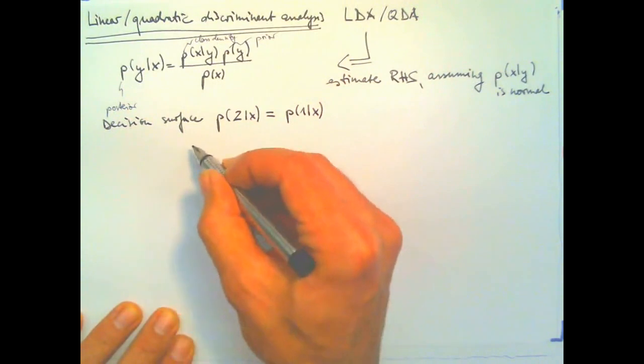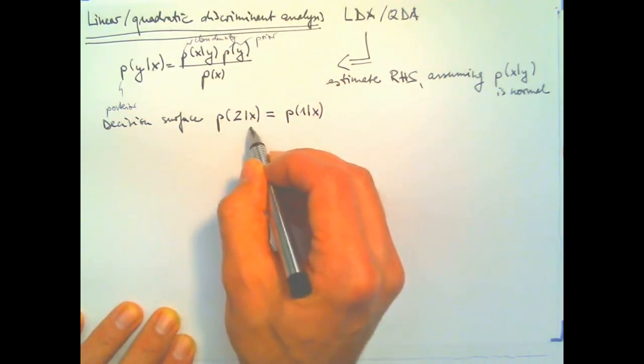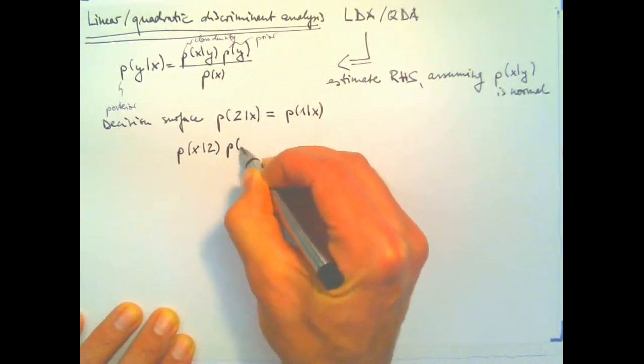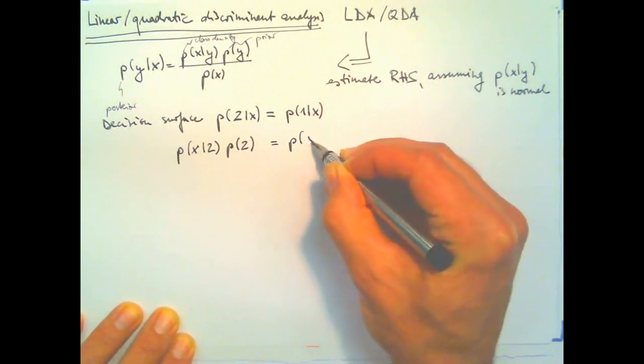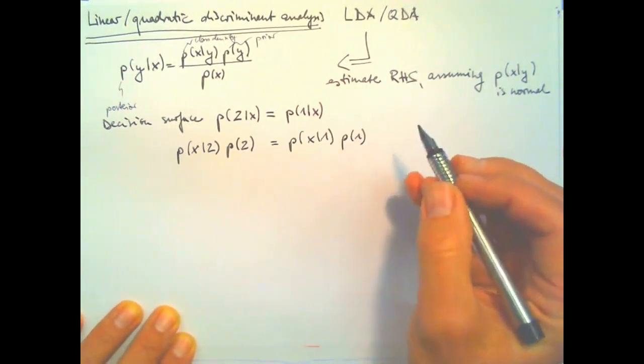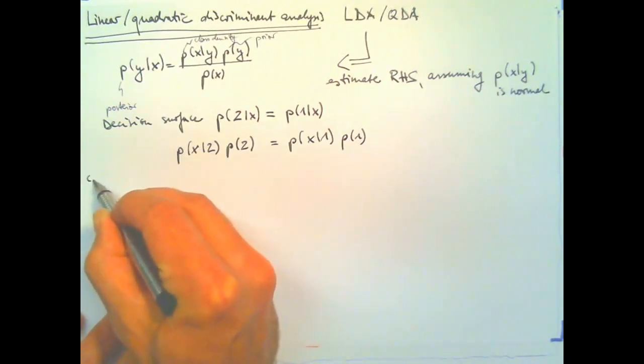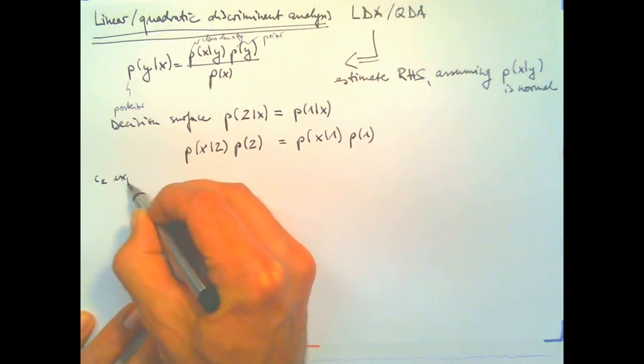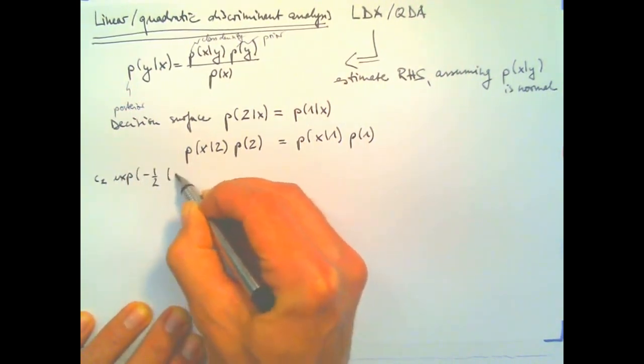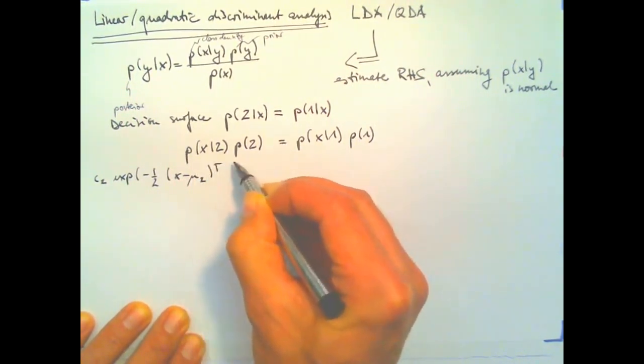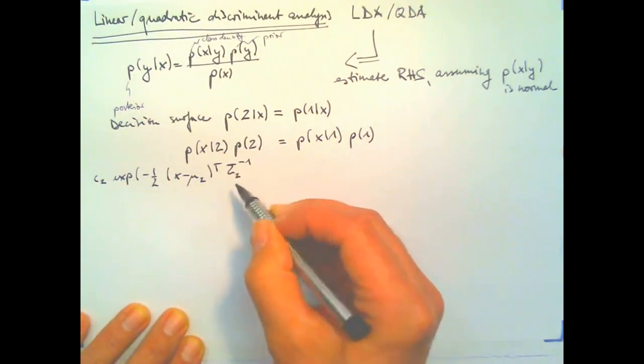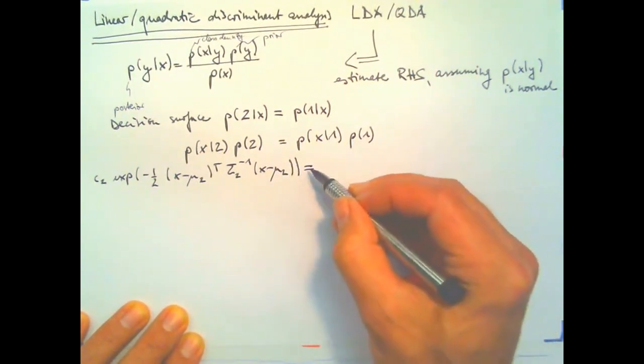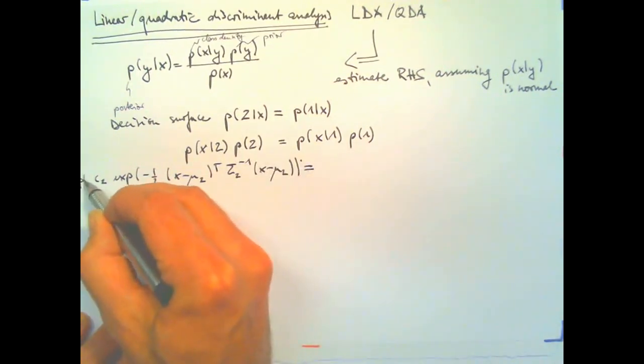And if you agree with this, then we can go on to put in the definitions and come up with a function of X that tells us where the decision surface lies. So, using Bayes' theorem, I can insert the definition or I can write the posterior in terms of what's written up there. So, I have the class density. So, I'm ignoring the normalizing constant and writing the following. This is for class two. This is the covariance function for class two which we also need to estimate from data. And I still need to multiply with the prior of class two.